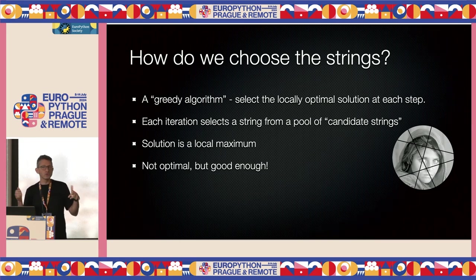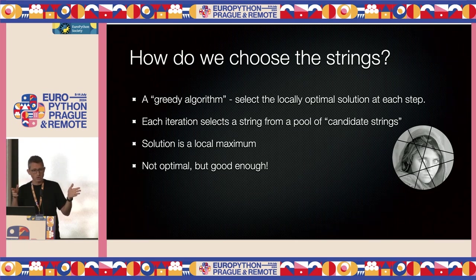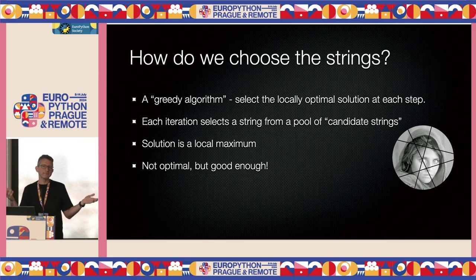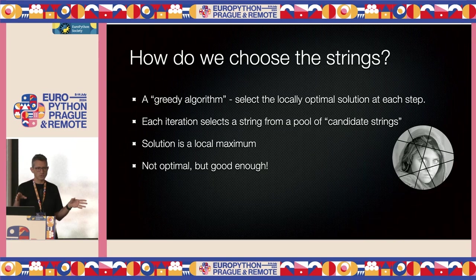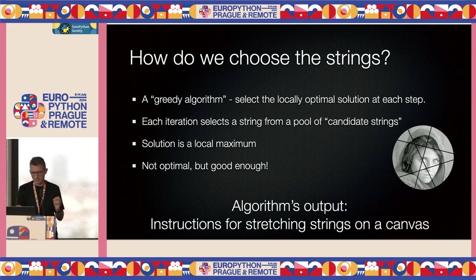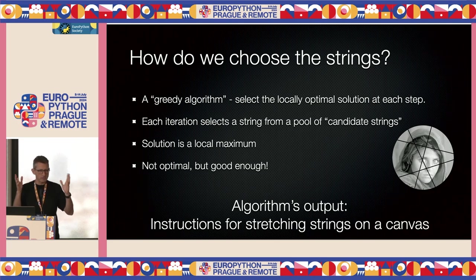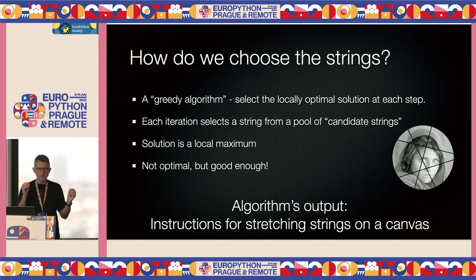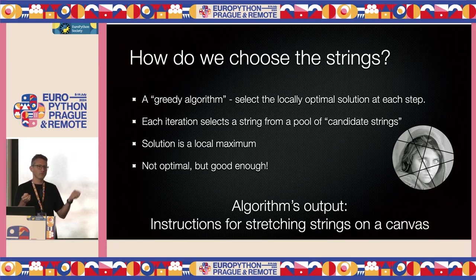We have iterations; each iteration we choose a single string from a pool of candidate strings that I randomly select. The one with the best score is the one I choose, and in the end we arrive at a local maximum. It's not the perfect solution, it's not the best solution, but it's good enough. The output of the algorithm is instructions — a bunch of points on the periphery of the canvas and how to stretch strings from one point to the other.